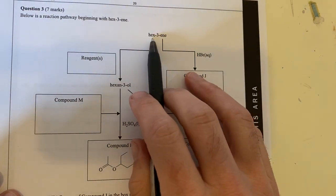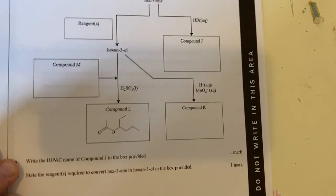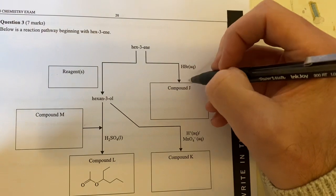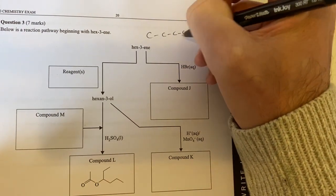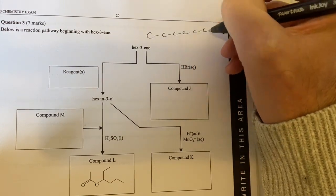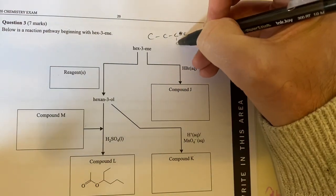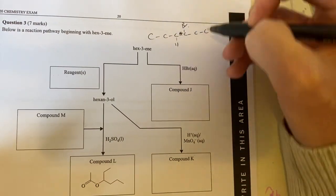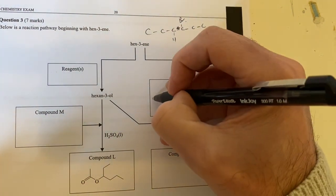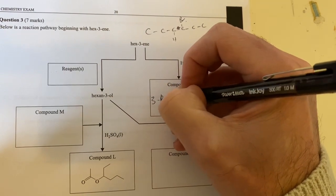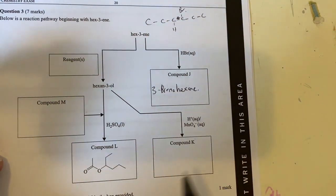What are we starting off with? We're starting with a hexene. Write the IUPAC name for compound J - so where's compound J? It's sitting here. I've got hexene reacting with bromine, so I'll draw out my skeleton: one, two, three, four, five, six. This is going to break that double bond and put a H there and a Br there, so therefore this is going to be 3-bromohexane. That's my answer to the first part.